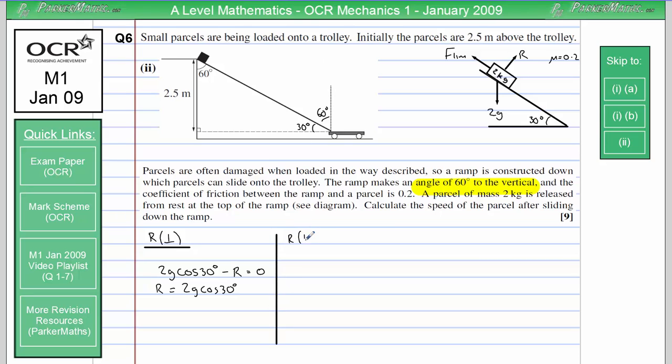Next, we'll resolve parallel to the slope. We have a component of the weight down the slope, and that is going to be 2g sin 30. We have limiting friction working in the opposite direction, so I'll put minus F lim, and that's going to equal mass times acceleration, so that will be 2a. We can substitute in for the value of limiting friction. If you remember that limiting friction is the coefficient of friction multiplied by the normal contact force, we get 2g sin 30 minus the coefficient of friction 0.2 multiplied by the normal contact force, which is 2g cos 30 equals 2a.